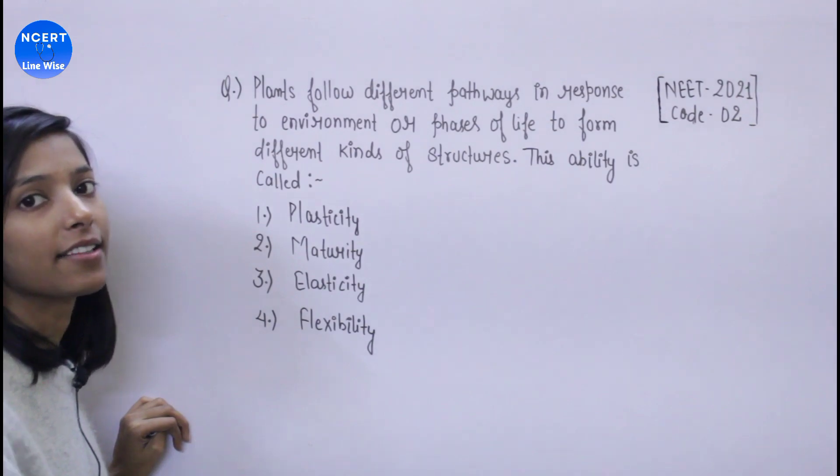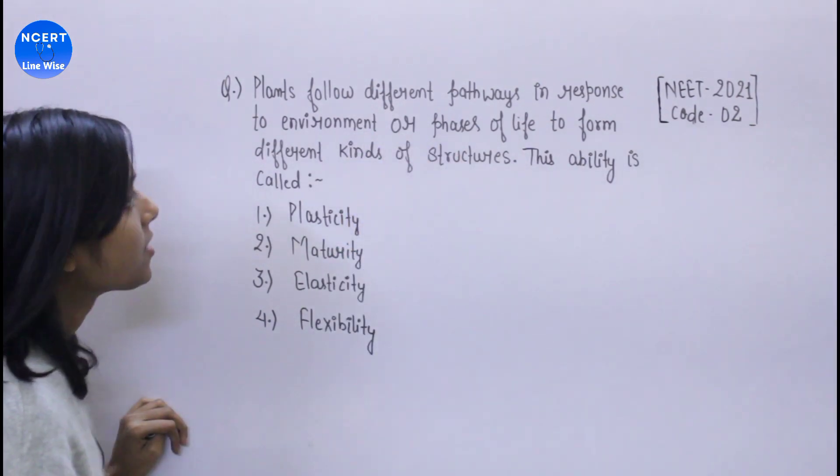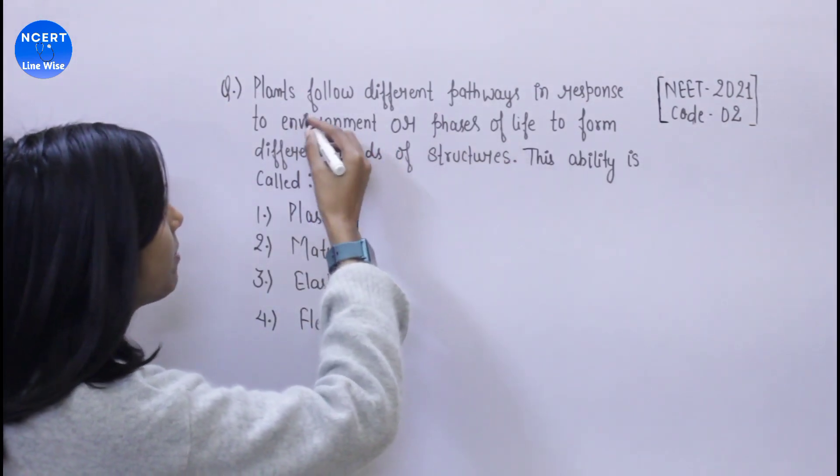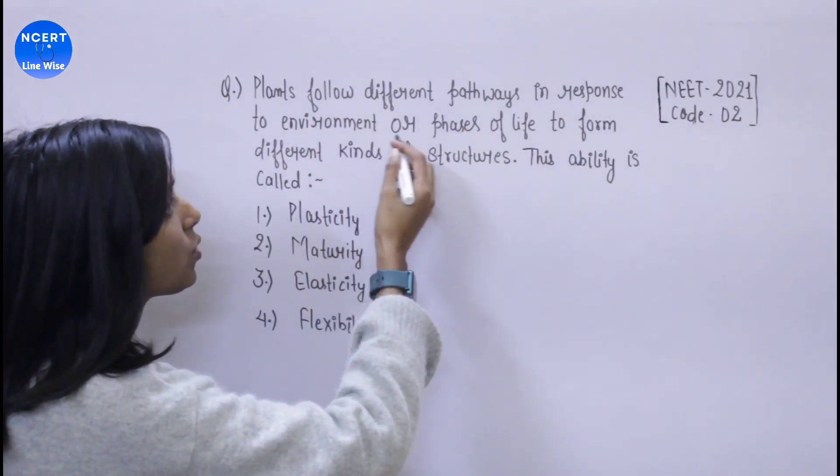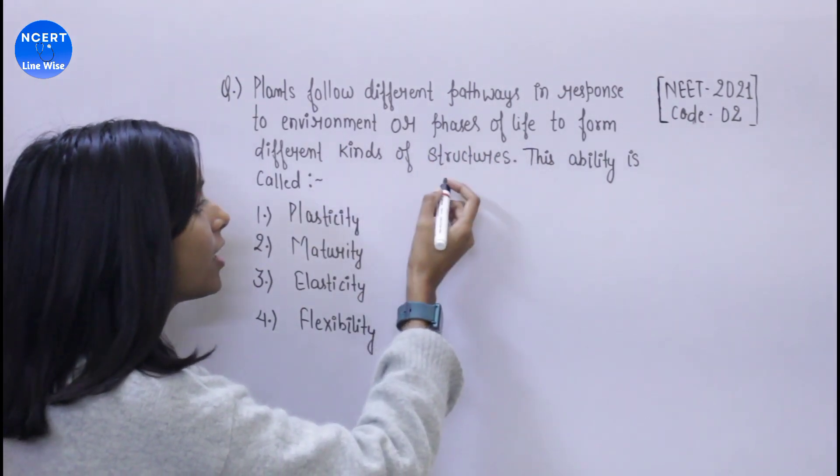In this way, through the phases of life, it forms different types of structures. Plants follow different pathways in response to environment and phases of life to form different kinds of structures.